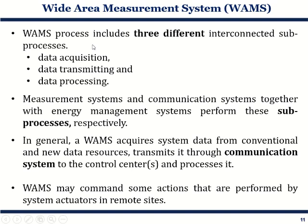The WAMS process includes three different interconnected sub-processes. First, data acquisition — data is taken from various devices. Then it is transmitted, and then data processing takes place. The measurement system and communication system together perform these sub-processes. Additionally, WAMS may also send commands directly to actuators at a remote site to perform some actions.